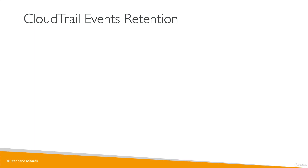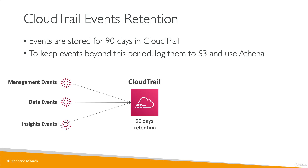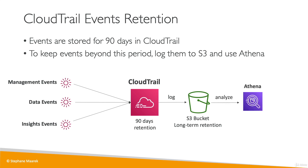For CloudTrail event retention, events are stored by default for 90 days and then deleted. If you need events longer — for example, for audit purposes going back a year — you must log them to S3 and then use Athena to analyze them. Management events, data events, and insights events all go into CloudTrail for the 90-day retention period, after which you log them to S3 for long-term retention and use Athena, a serverless service for querying S3 data, to find and analyze the events you need.